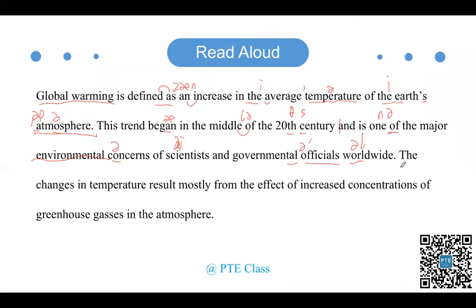然后紧接着到下面一句：the changes in temperature — 注意 change 后面加 es 读成 changes。The changes in temperature result mostly from the effect of increased concentrations — 注意 concentration 的发音。of greenhouse gases in the atmosphere — 注意 greenhouse 中 house 嘴巴要张开，不要读成 'huz'。gases 注意 gas 后面加 es。然后 in the atmosphere，这里 the 要发生变音，atmosphere 重音在后面。